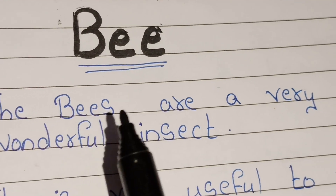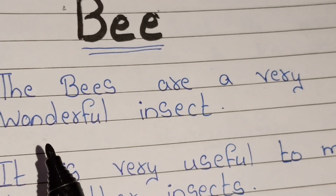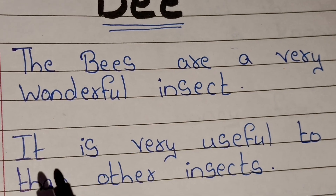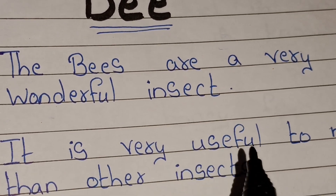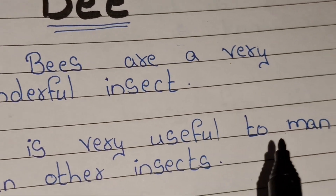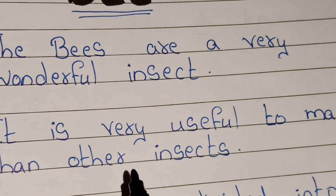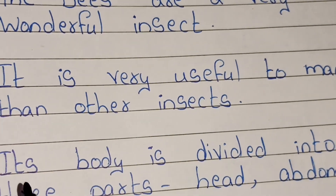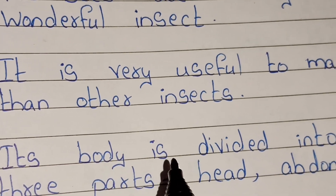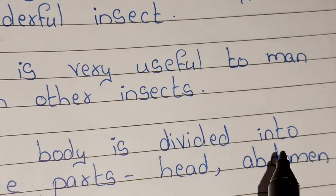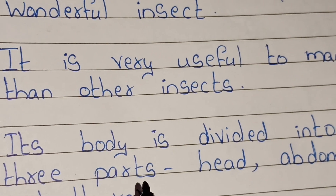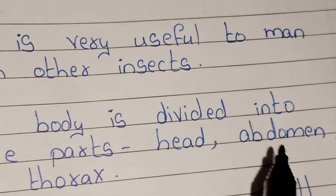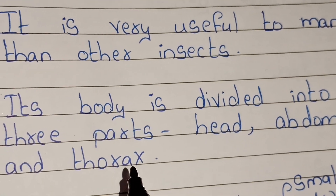The bees are a very wonderful insect. It is very useful to men than other insects. Its body is divided into three parts, i.e. head, abdomen and thorax.